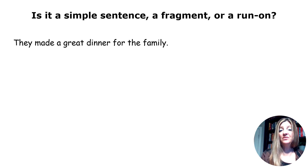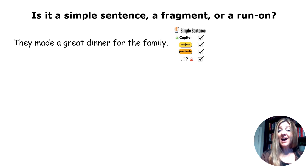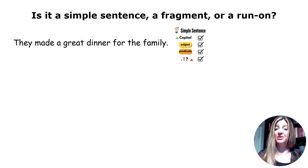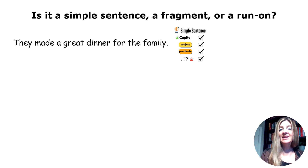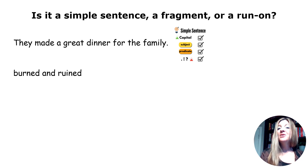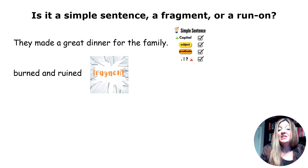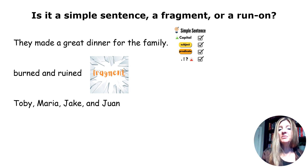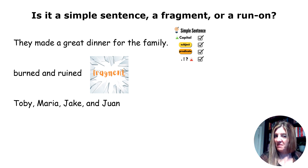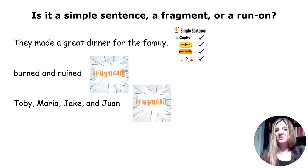I show them: 'They made a great dinner for the family.' This has a subject — who made a great dinner? They. Subject. What did they do? Made a great dinner for the family. Predicate. And it has a capital and end mark, so if you have an S on your desk, you're correct. How about 'burned and ruined'? What was burned and ruined? It's a fragment — I don't have a subject. 'Toby, Maria, Jake, and Juan.' What about them? I have a subject — a who — but I don't have a what about them. That's also a fragment.